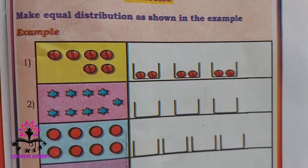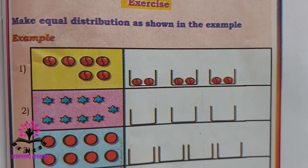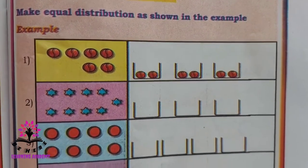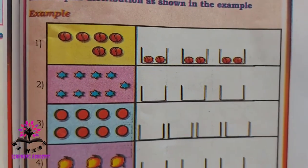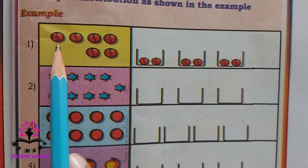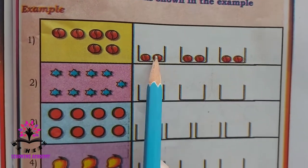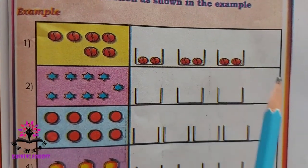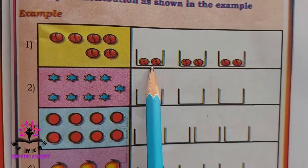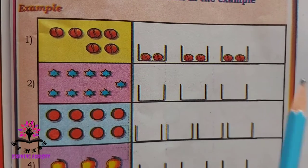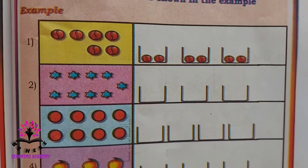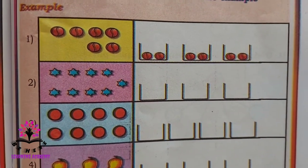Make equal distribution as shown in the example. The first one: there were six balls divided in three trays — two balls each are there in one tray.